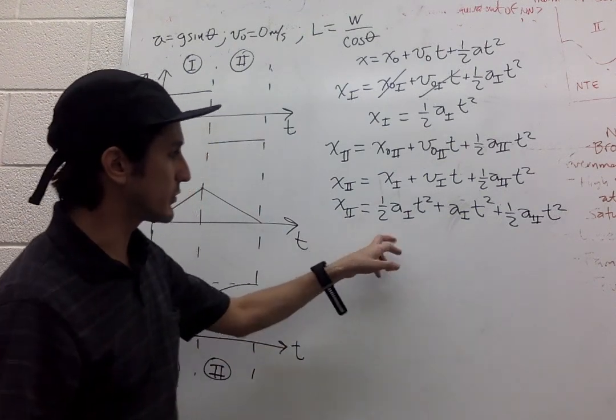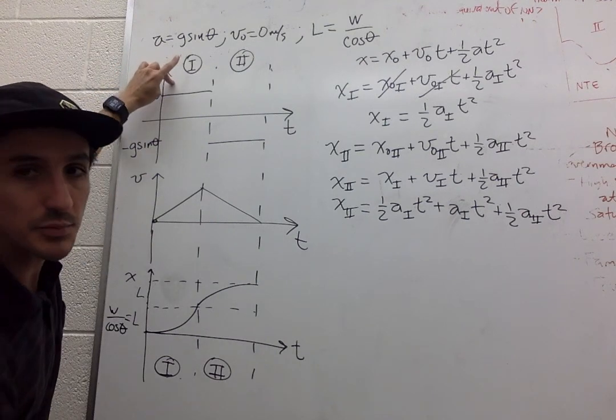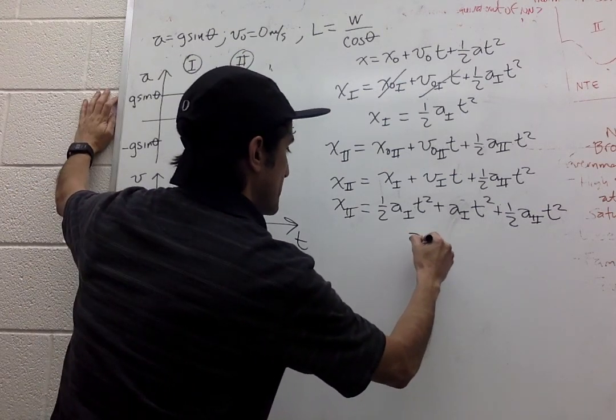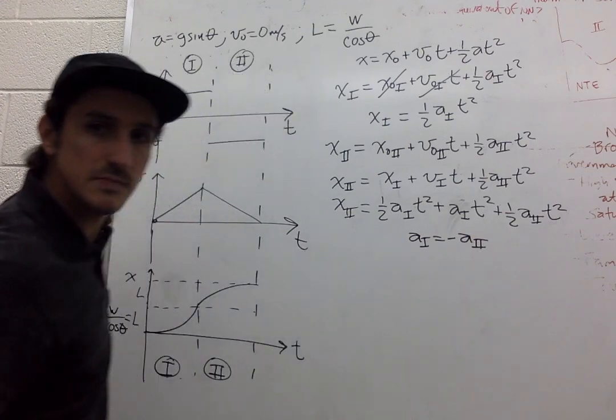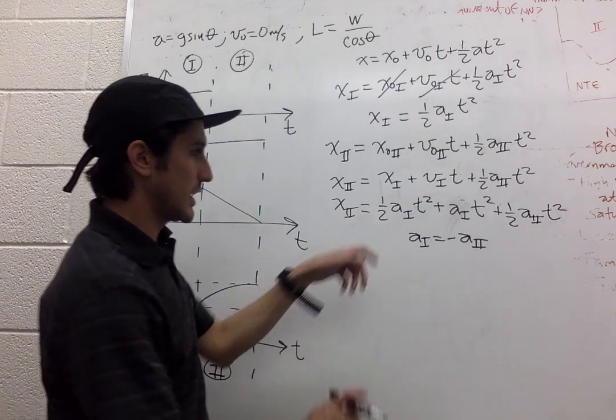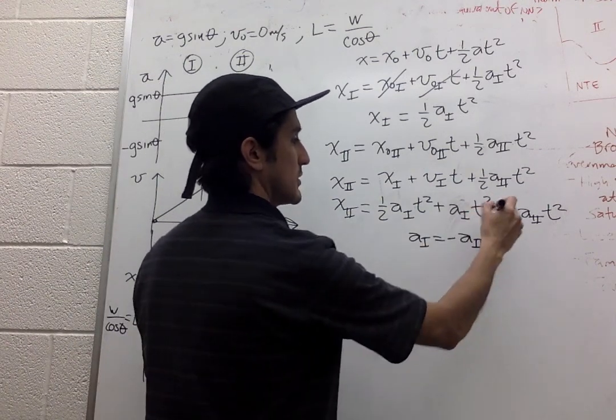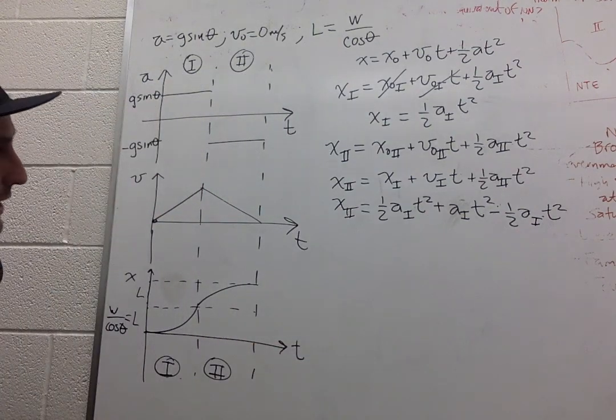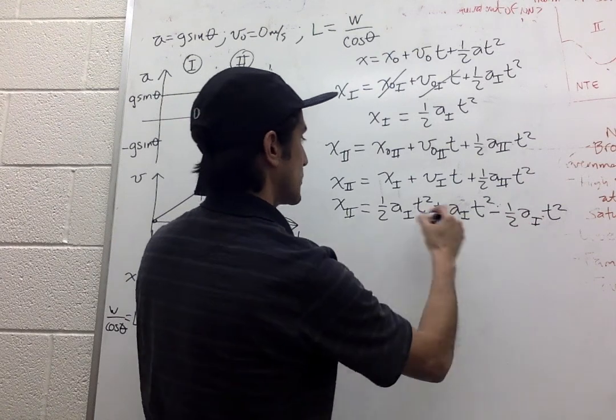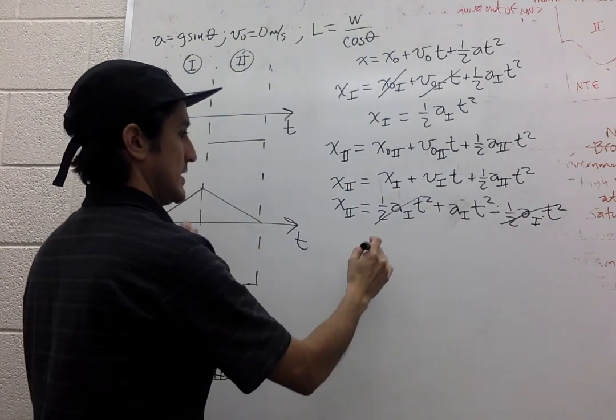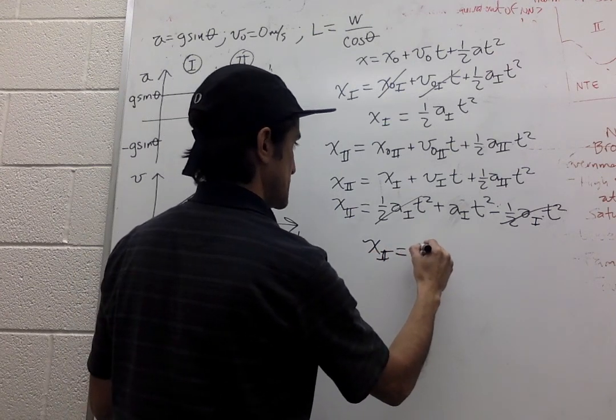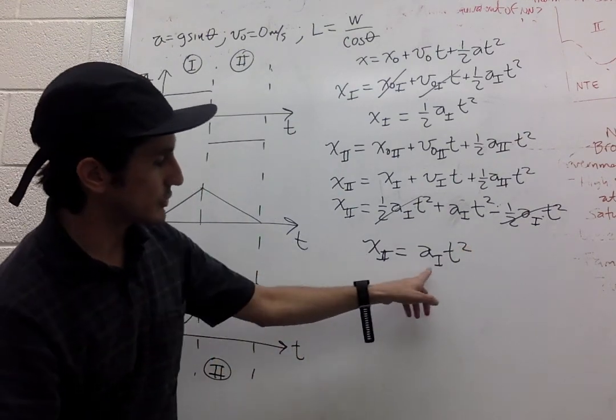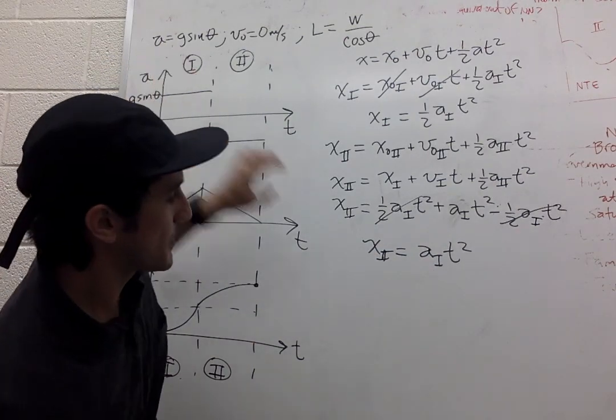And we can simplify this even further if we look at the accelerations. This one is positive, this one is negative, but they have the same magnitude, opposite direction. So we have this condition, which means we can rewrite this as negative a1. And it's starting to look pretty good. So now we can get rid of this term and this term. And so the final position is just acceleration in the first segment times t squared.